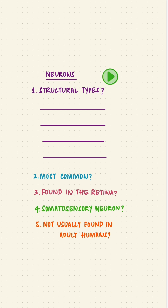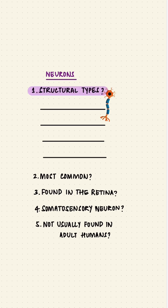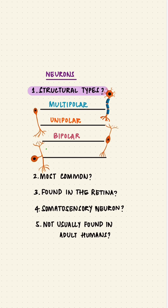But I just get one minute, so time's up. Every neuron has a cell body and branches. Depending on the number of branches emerging from the cell body, we have multipolar, unipolar, bipolar, and pseudo-unipolar neurons.